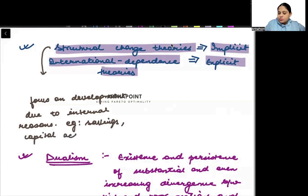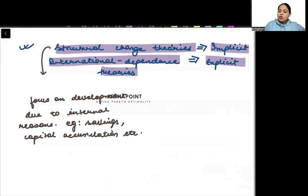So basically, implicit theory explains why growth is taking place, why development is taking place, what is the reason behind it. It is the internal reasons like savings rate, capital accumulation rate, etc.